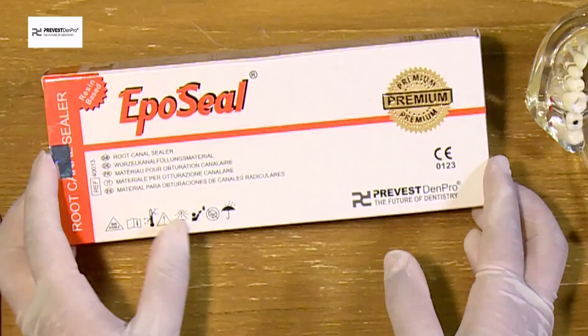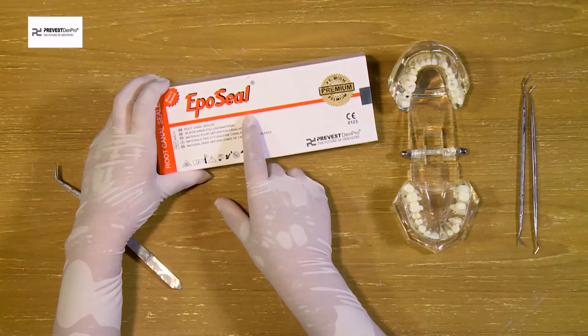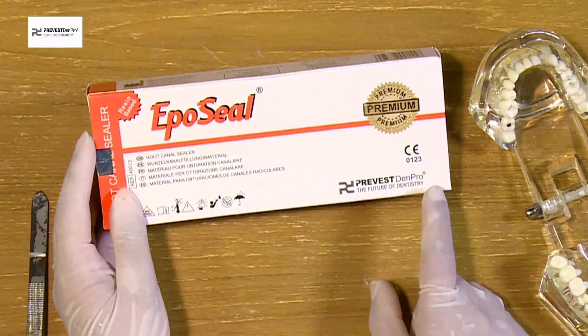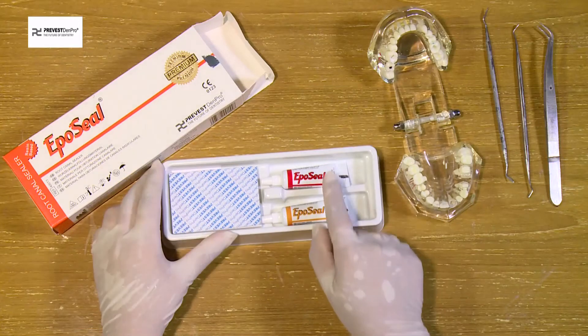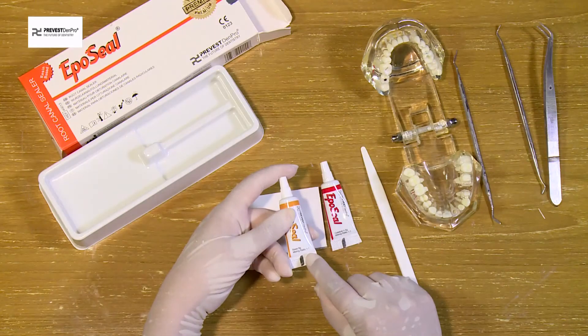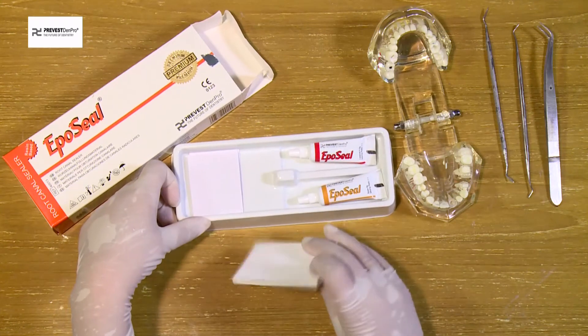We hereby introduce the new epoxy resin sealer EpoSeal, manufactured by Prevest Denpro Limited. The kit contains two tubes: a 9 gram base and a 4.5 gram tube containing the catalyst. The kit additionally has a mixing pad and a detailed instructional manual.